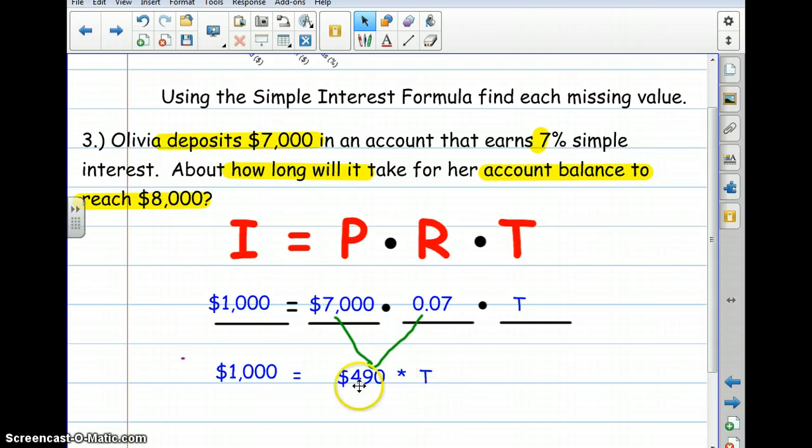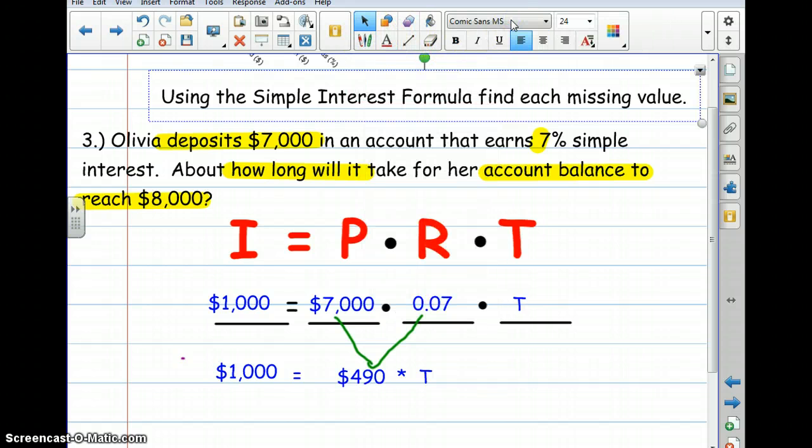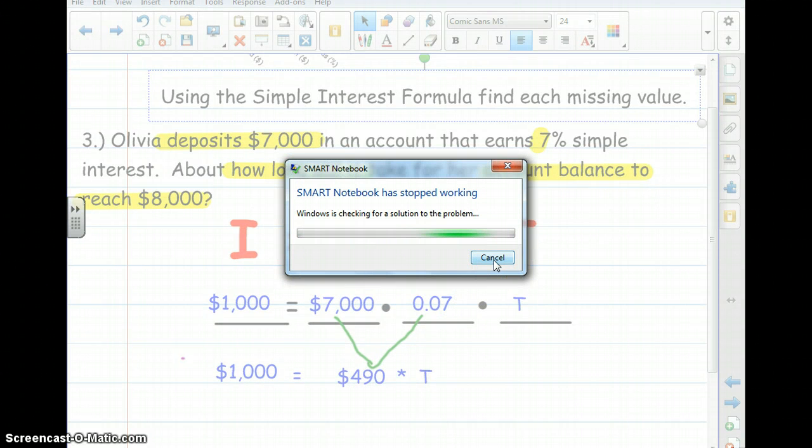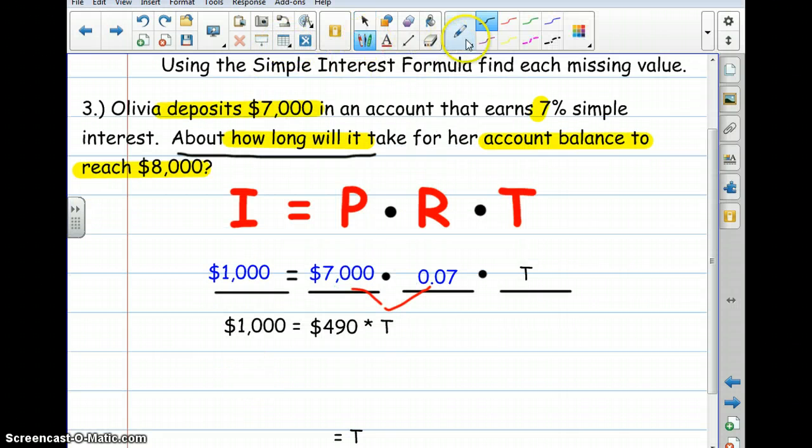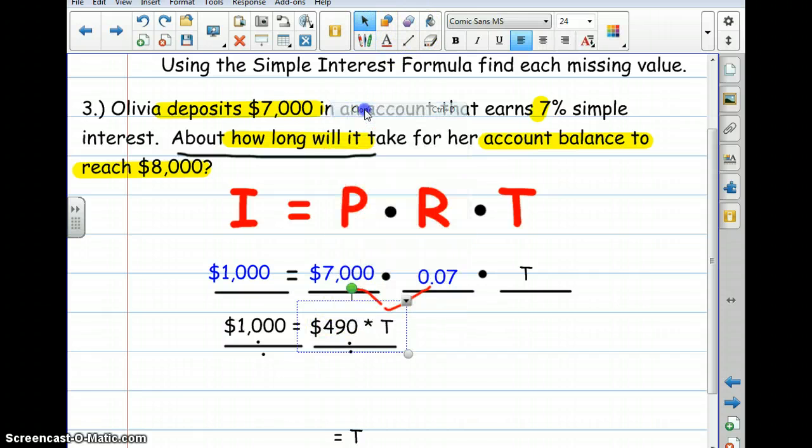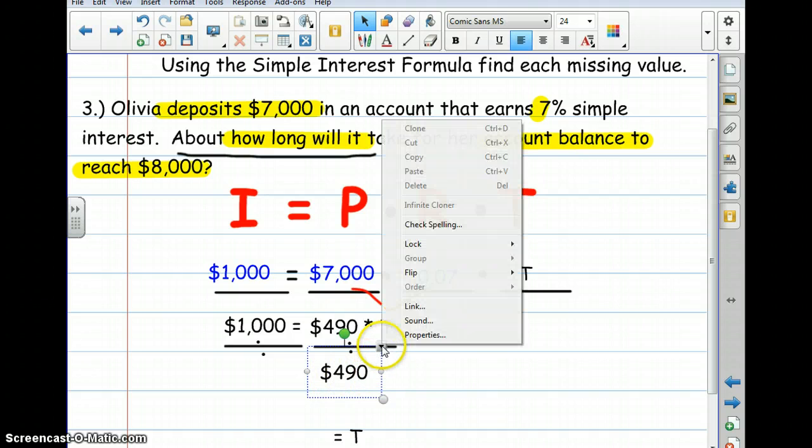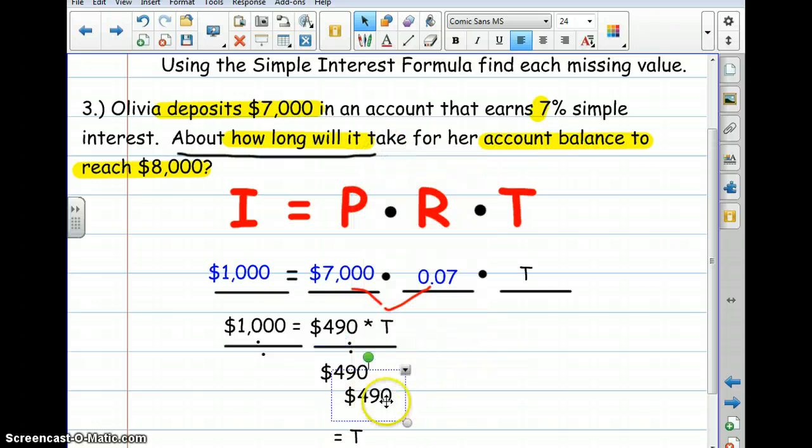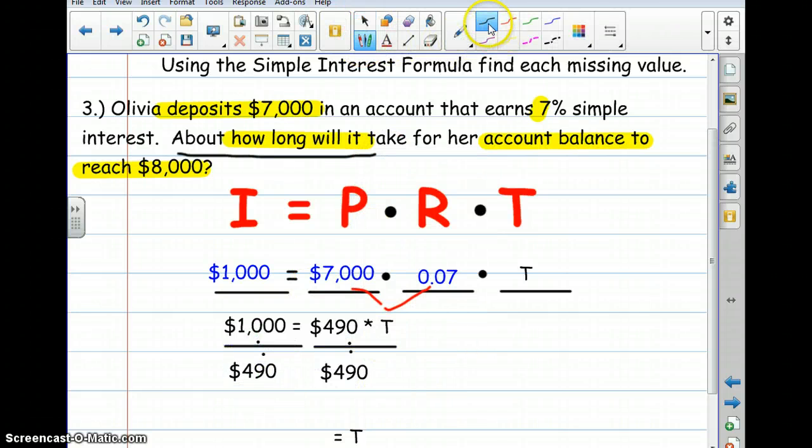So now we look and we say $490 times some number that I do not know would give me $1,000. And since it's multiplication that's happening here, I'm gonna work backwards - I'm gonna do the opposite operation. Since this is multiplication, I'm gonna do the opposite operation, which would be division. I'm gonna divide both sides by the number 490, because our goal is to get the variable by itself.